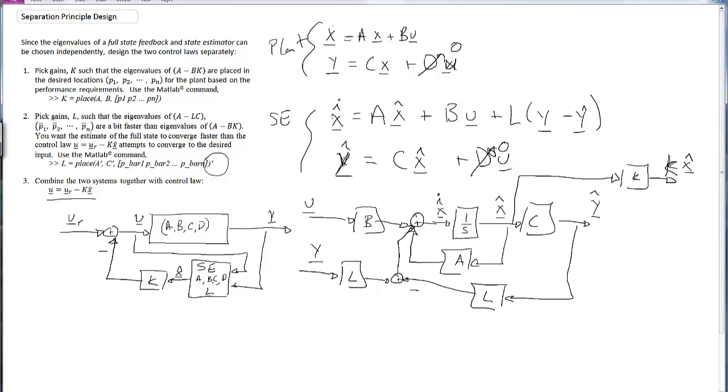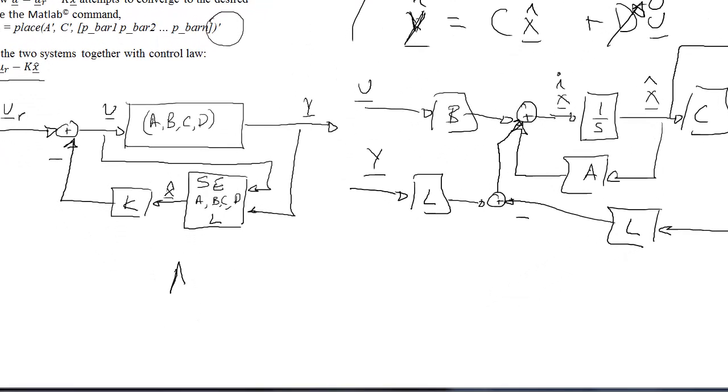So let's go ahead and continue on with our example of how to do a state space design with the separation principle. Recall that we had an A matrix in this example that we started in the last lecture. We had an A matrix of [0, 1; -1, -1]. We had B equal to [0; 1]. And we had C equal to the identity.